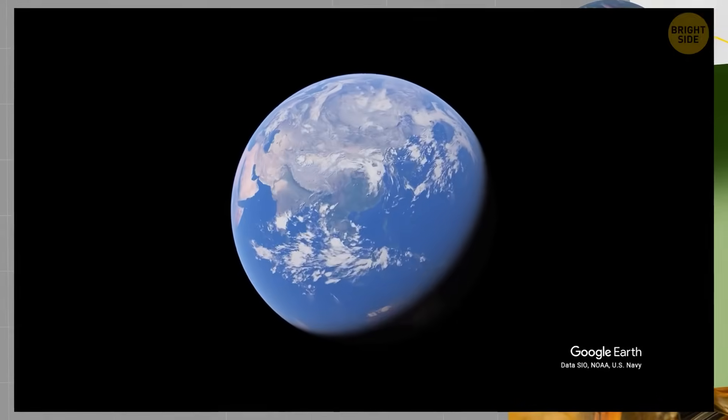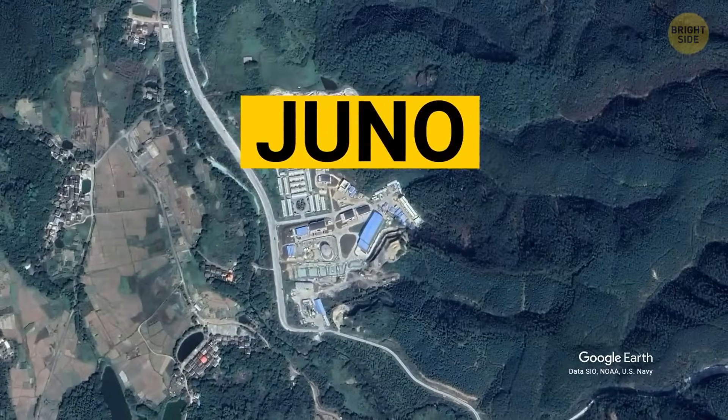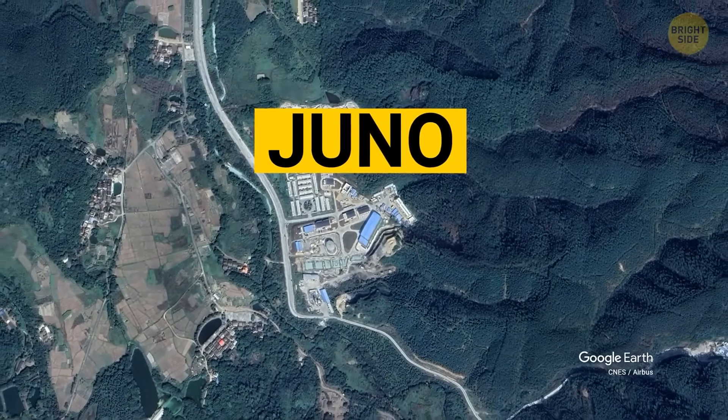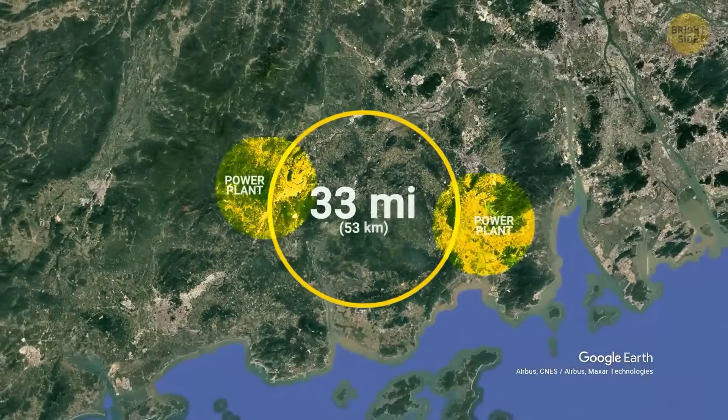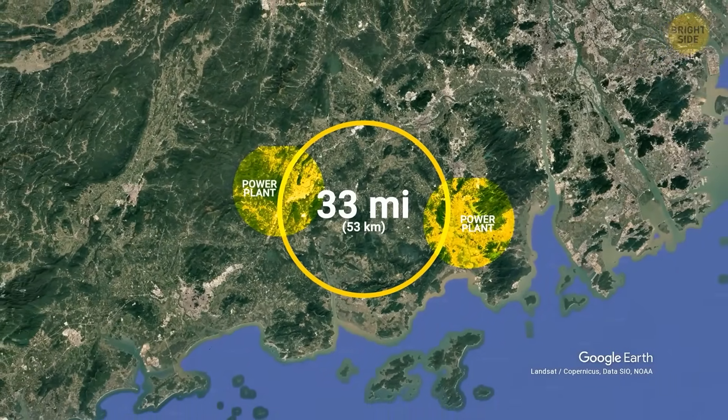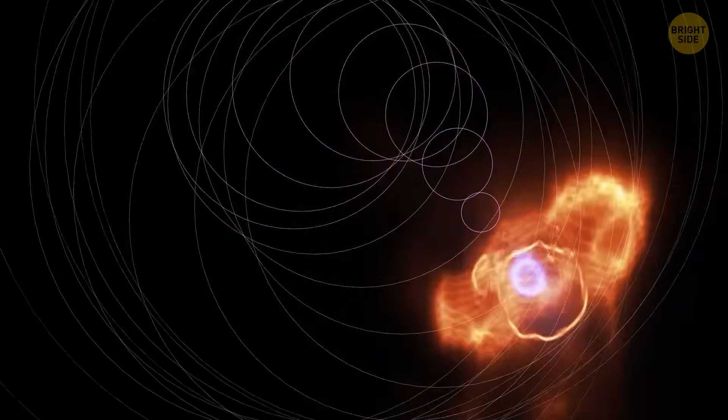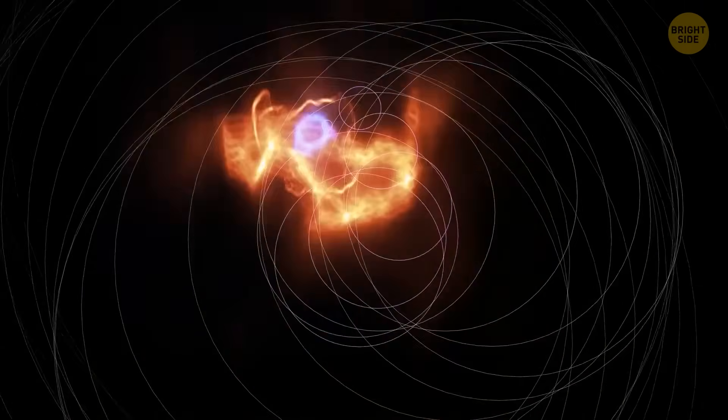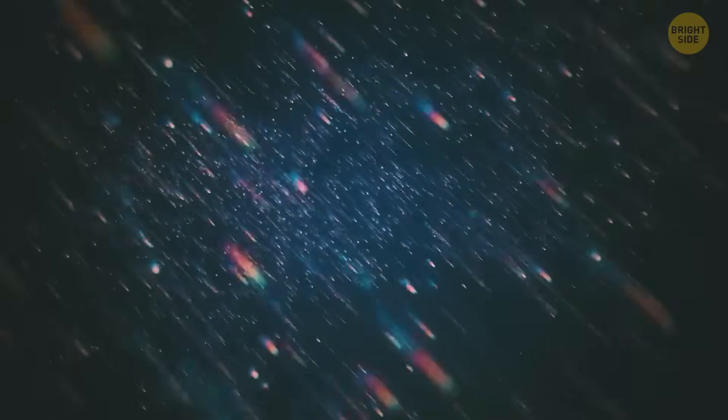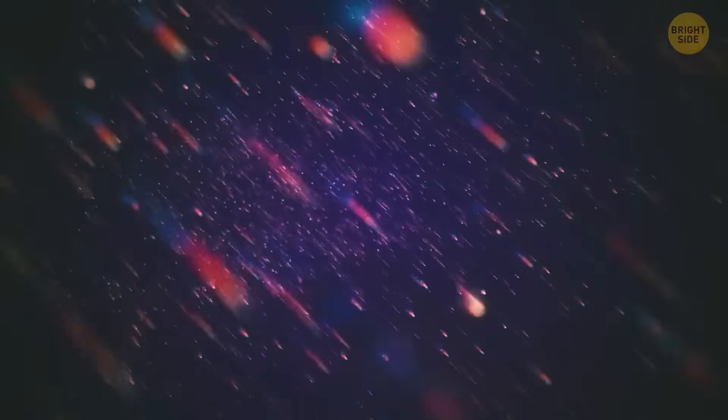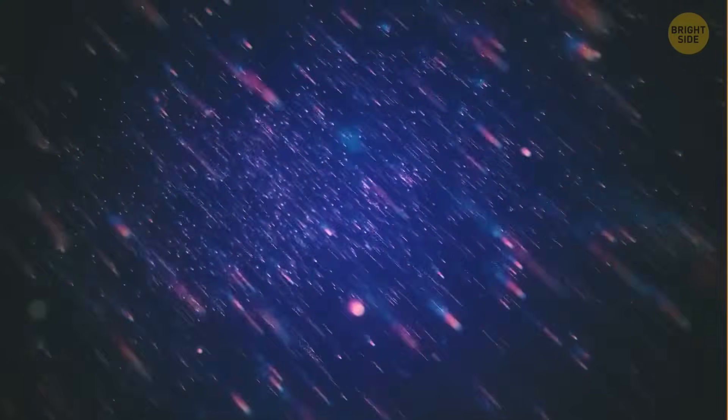Juno is also located almost 33 miles from two nuclear power plants. These plants produce tons of neutrinos, specifically anti-neutrinos, the antimatter counterparts of neutrinos, through the radioactive decay of uranium and plutonium in their reactors. By studying how these anti-neutrinos change as they travel to Juno, scientists hope to uncover the neutrino mass hierarchy.